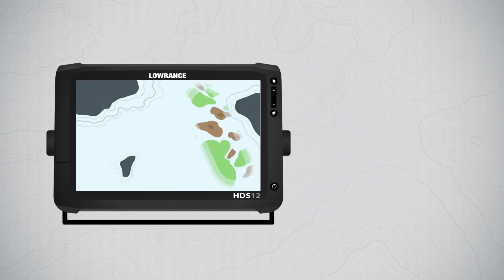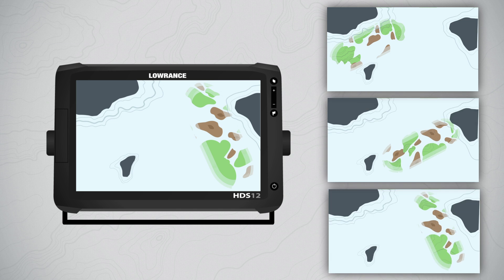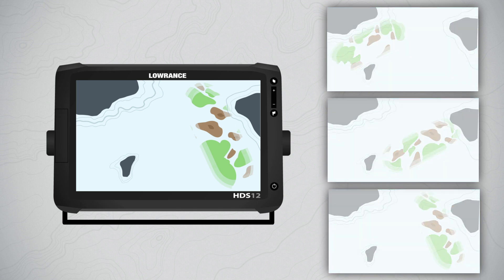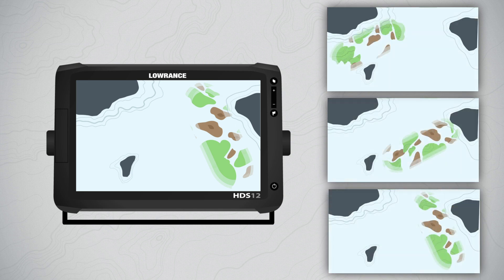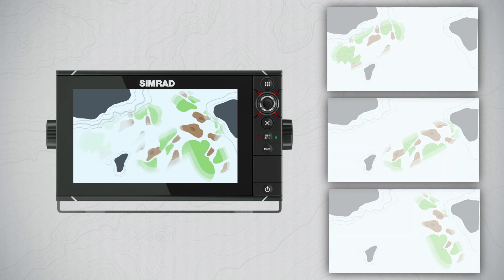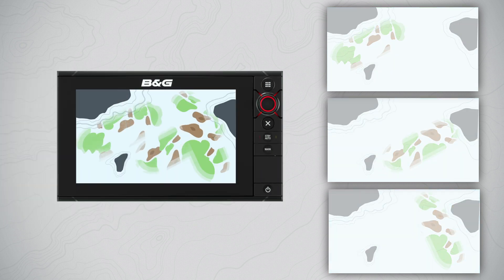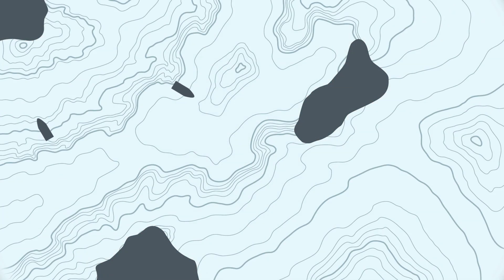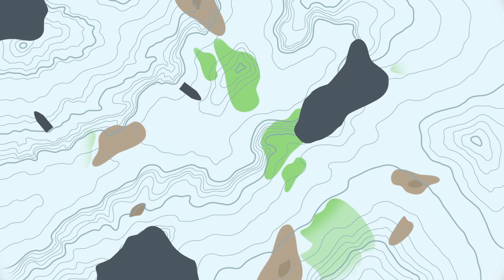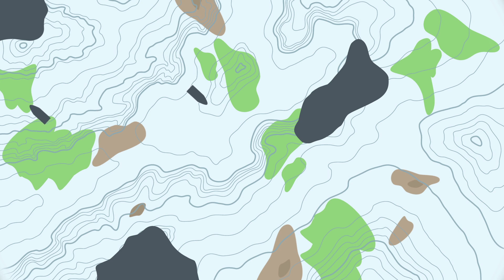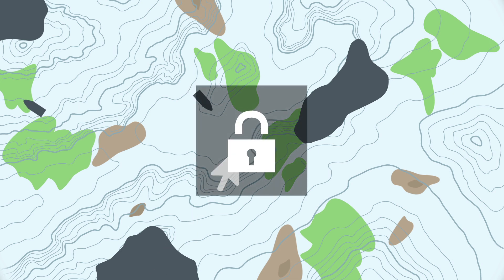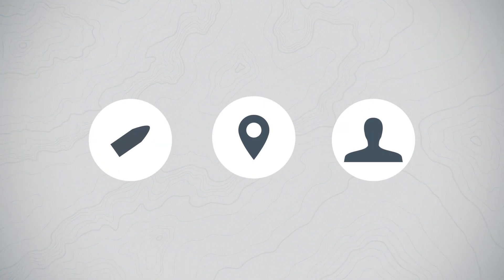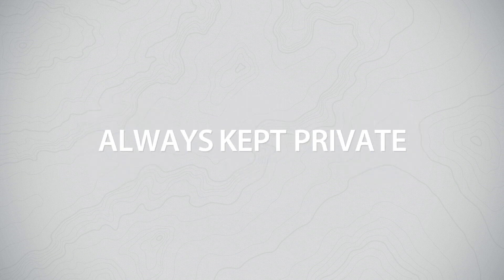Premium subscribers can load their custom maps and Social Map charts onto their compatible Lowrance Elite HDI, HDS, Simrad NS series, or BNG Zeus chart plotters for use on the water. As a premium subscriber, you can also create unique bottom hardness and vegetation location maps, and can choose to mark your maps as private for personal use only. No matter which option you choose, your trails, waypoints, and other personal data are always kept private.